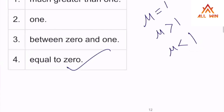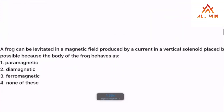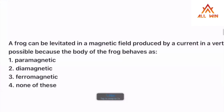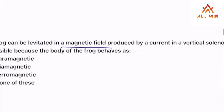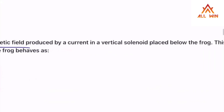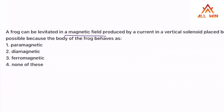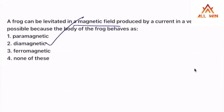A frog can be levitated using the magnetic field produced by a current in a vertical solenoid placed below the frog. This is possible because the body of the frog behaves as a diamagnetic material. Superconductor levitation — superconductors are the biggest diamagnetic materials.